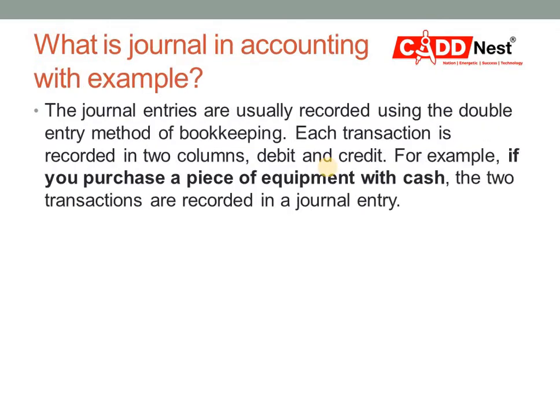So what is a journal in accounting? We have an example here. Journal entries are usually recorded using the double entry method of bookkeeping. Each transaction is recorded in two columns — debit and credit. For example, if you purchase a piece of equipment with cash, two transactions are recorded in a journal entry: a purchase entry, and also an entry in the cash book. This is what a journal is, along with an example.